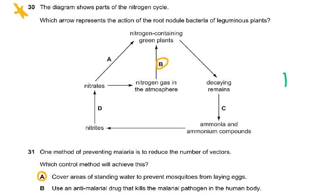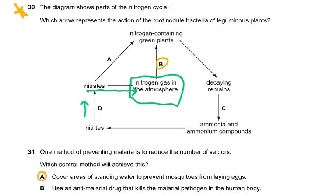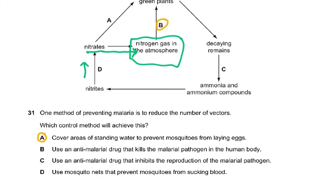Question 30: The diagram shows part of the nitrogen cycle. Which arrow represents the action of root nodules bacteria of leguminous plants? They convert nitrogen gas in the atmosphere to nitrogen-containing compounds in green plants. The arrow coming out of nitrogen gas in the atmosphere represents either lightning, the Haber process, or leguminous plants. There was only one arrow coming out of it; all others go back to it. The arrow from nitrates to nitrogen gas represents denitrifying bacteria — the enemies of farmers. Decaying organisms to ammonia, then nitrites to nitrate, is nitrification.